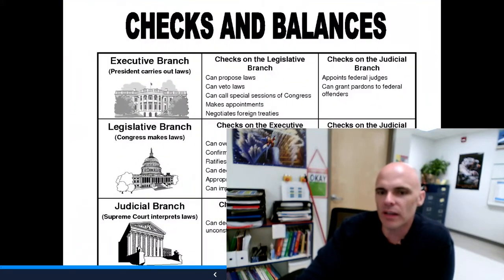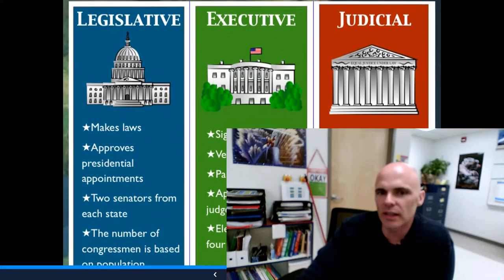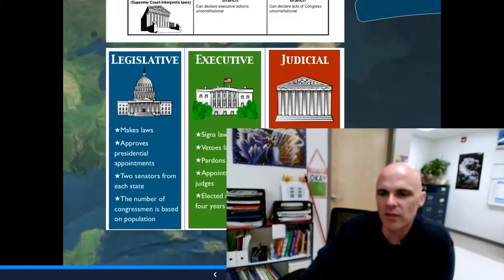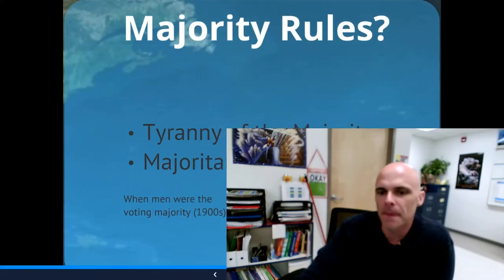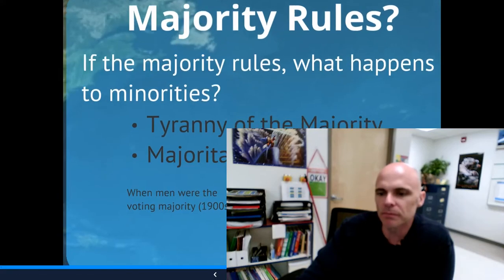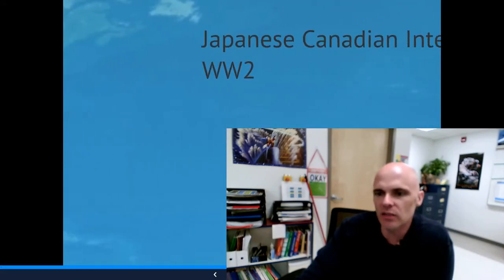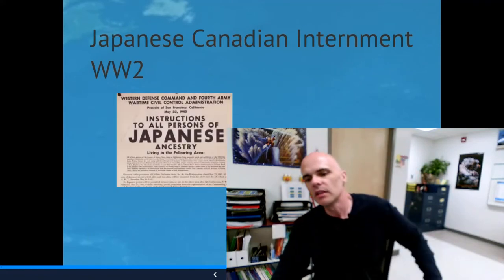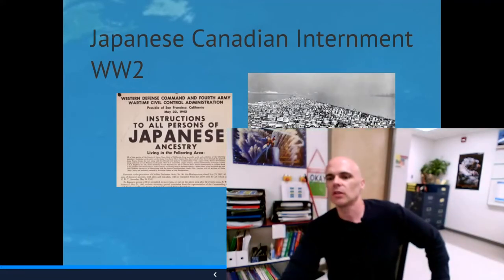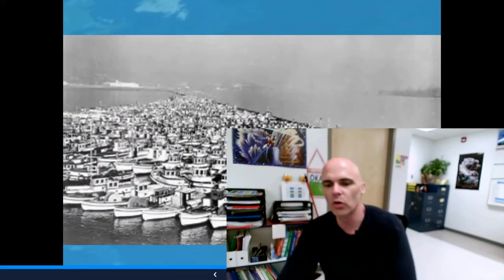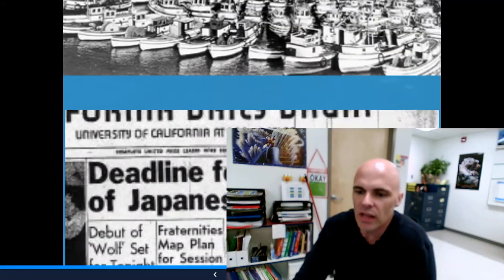We also have the system of checks and balances in the United States — we looked at that when we looked at accountability, and there are a couple of good visuals there to summarize that for you. We looked at the tyranny of the majority, incidences of illiberalism including the internment of Japanese Canadians, the oppression of Indigenous Canadians, the cultural genocide that we've seen, forced homogenization and assimilation.